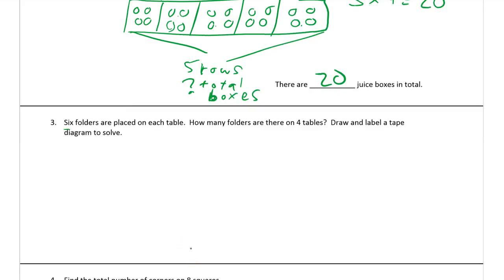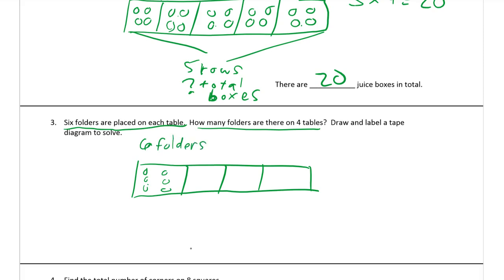Number three. Six folders are placed on each table. How many folders are on four tables? So here's our piece of tape. We know we're going to have four tables. And we know that there's six in each table - we'll make it look like dice here. We know that there are six folders and we know that there are four tables, but what we don't know, the unknown, is how many total folders.